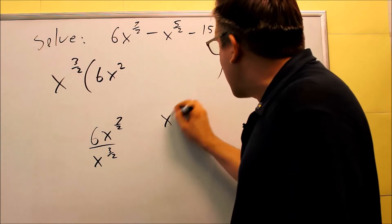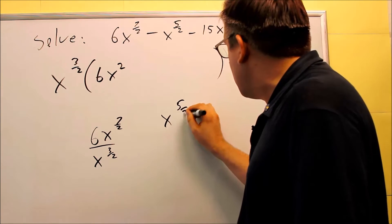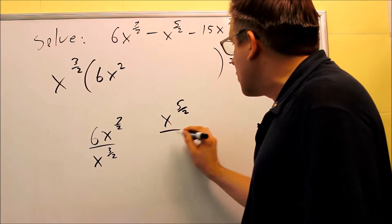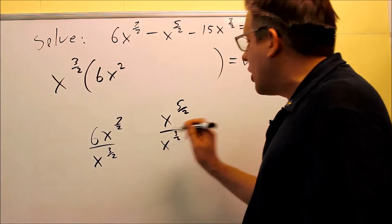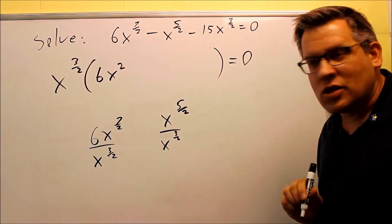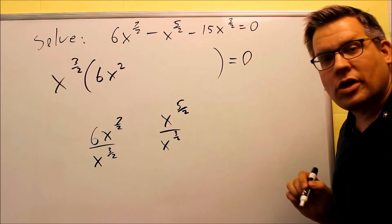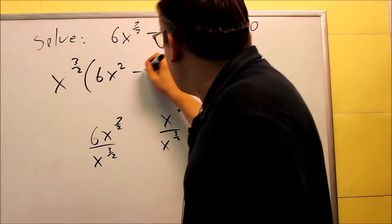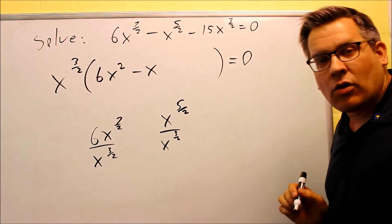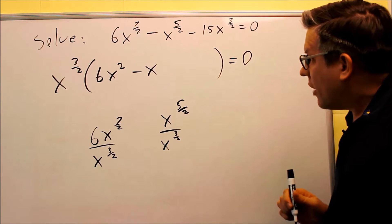Let's do the next one. I have an x to the five halves, and I'm dividing this by x to the three halves. So again, because you're pulling something out, it's the same thing as division. You're going to subtract these exponents. Five halves minus three halves will give you two halves. So minus x to the first power, and that's all we can do on that one.